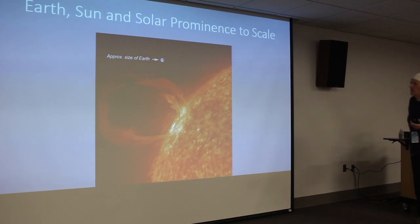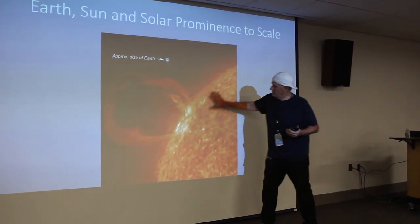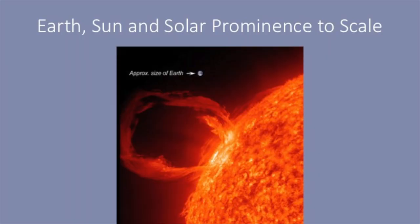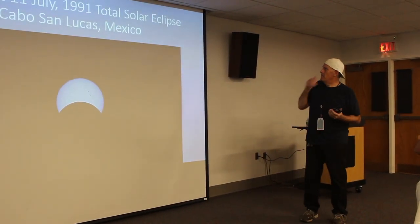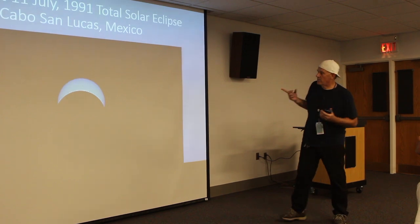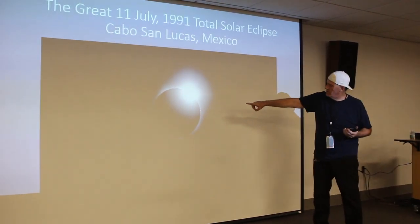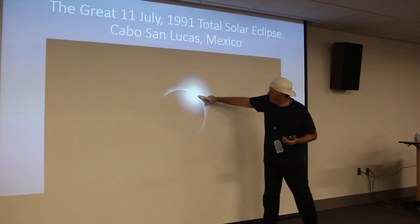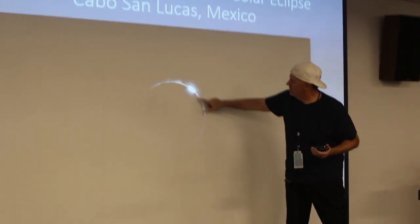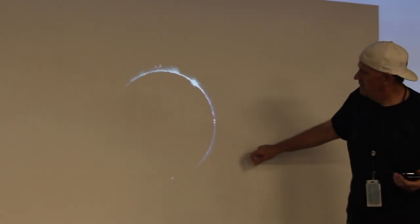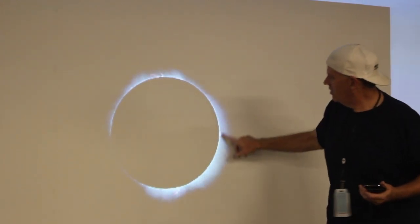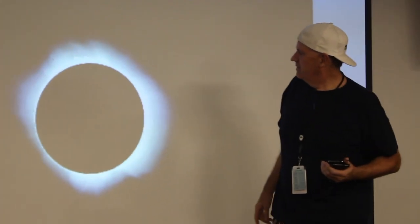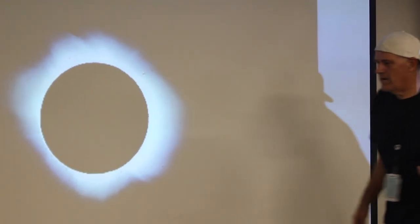This is the earth, sun, and a solar prominence to scale — here's the disk of the sun, this span is about 100,000 kilometers, and here's the disk of the earth, so you get a good sense of the sizes involved. This is the great July 11th eclipse in Mexico, Cabo San Lucas — I took this. It's an animated composite of a series of frames showing the diamond ring effect, some prominences, the solar chromosphere in ruby red, and the solar corona. It's a composite of about 22 frames.